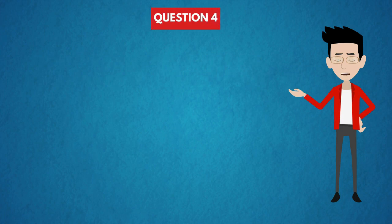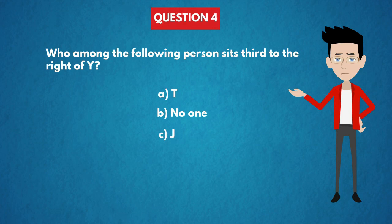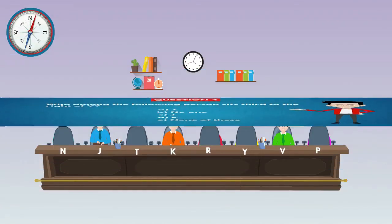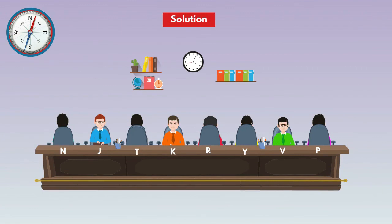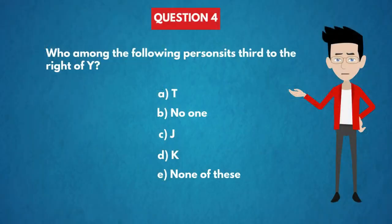Question 4: Who among the following person sits third to the right of Y? Options: A) T, B) No one, C) J, D) K, E) None of these. In the diagram, Y sits here and no one sits third to the right of Y. The answer is Option B: No one.